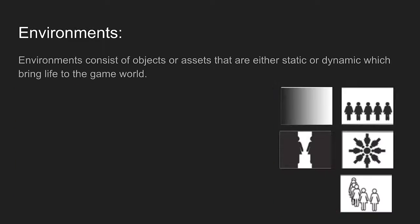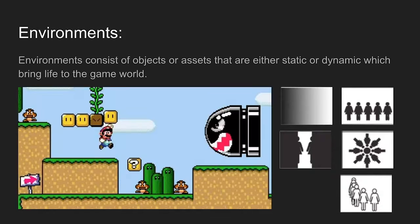If I had to pick just two elements of design which are really important to environments, that's value and space. You want to make sure that the characters stand out from the background for readability — that's where value comes in. Spacing is important because that's where you're placing your platforms of movement, which creates patterns, harmony, and rhythm. By using positive and negative space, you create an interesting level for the player to explore and move through.